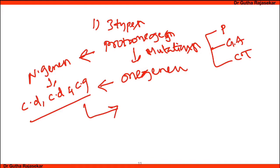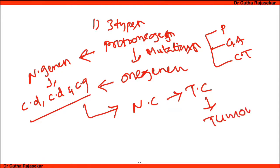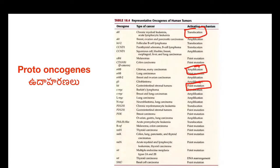When normal cells are transformed into tumor cells, these processes become dysregulated. Proto-oncogene products are processed and released. They perform different activities and functions in the cell cycle, regulating cell growth and differentiation.